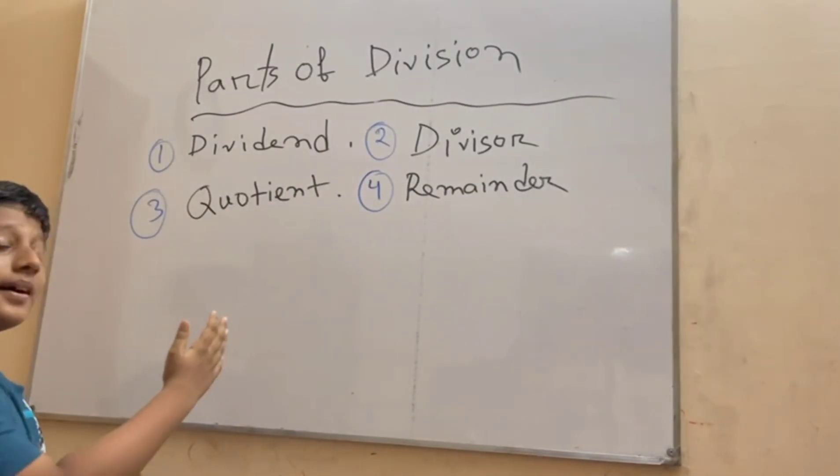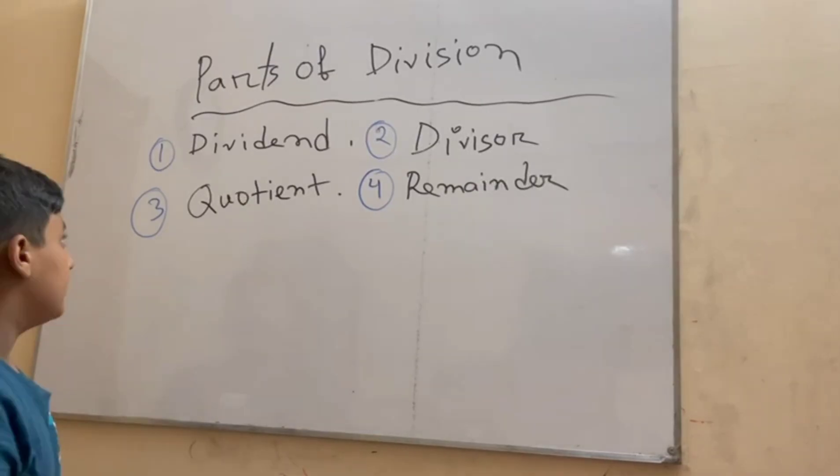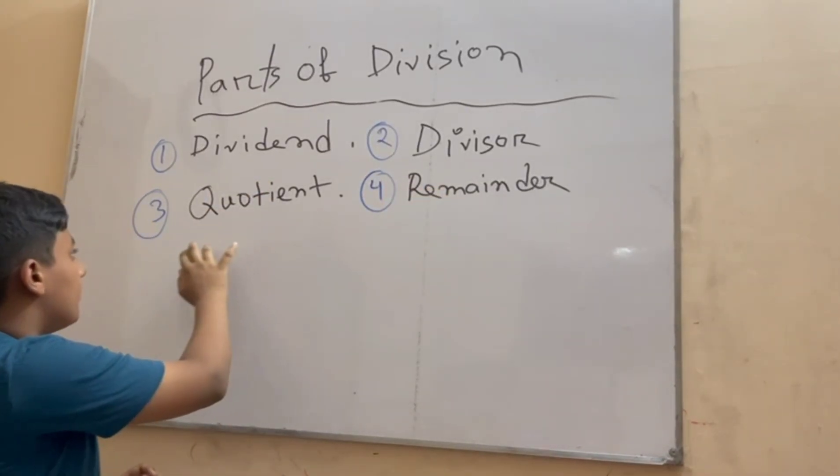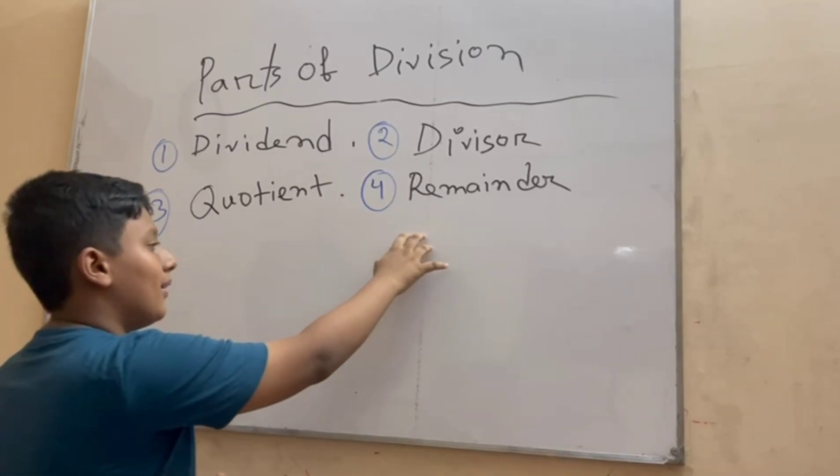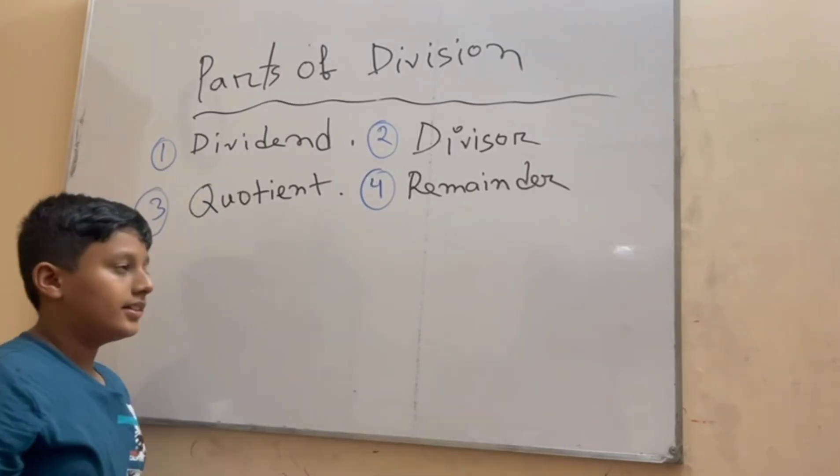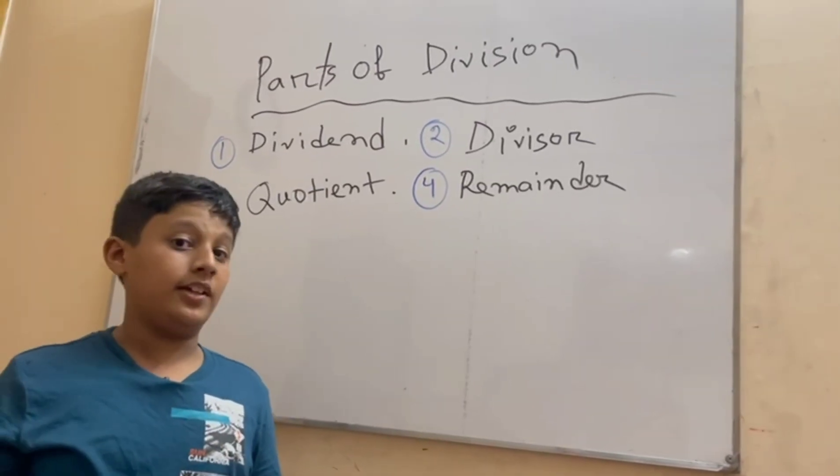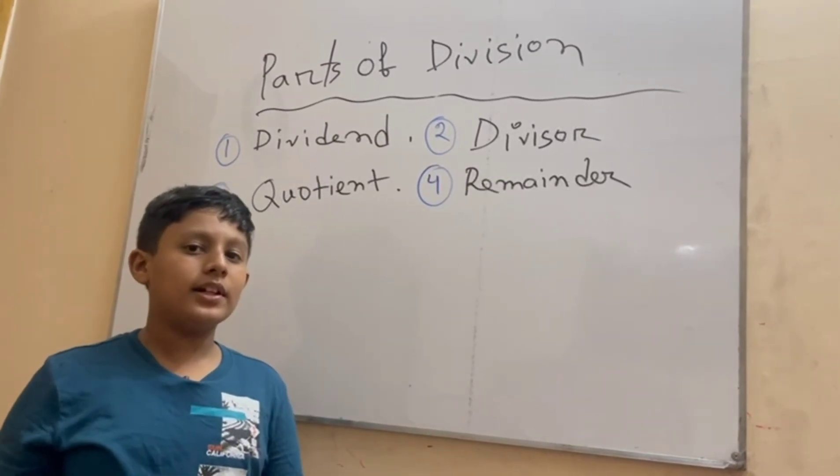Now let's look at the parts of a division. There are four parts in a division: number one dividend, number two divisor, number three quotient, number four remainder. These are the very important parts in a division that you have to know while doing a division.